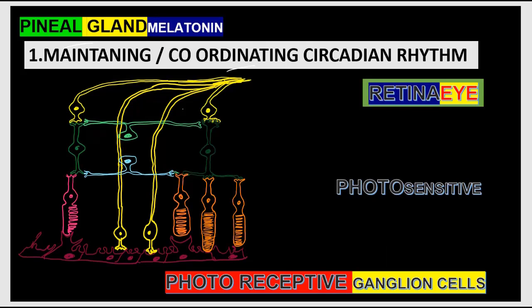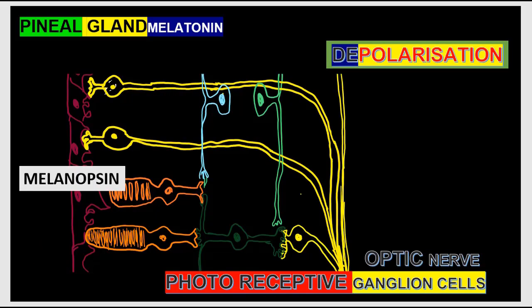For the circadian rhythm or sleep-wake cycle, we start from the eye — the most light-sensitive area. In the retinal layer, besides rods and cones, there are intrinsically photosensitive retinal ganglion cells. These are not for vision; the photopigment inside them is called melanopsin, not rhodopsin. Melanopsin can absorb light and cause depolarization, generating action potentials.